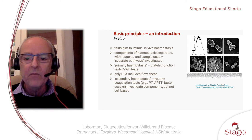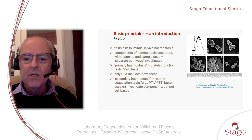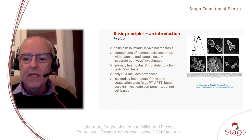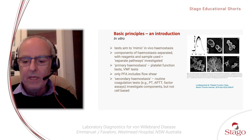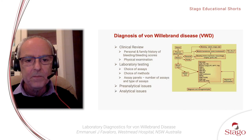A is where we have resting platelets, B where we have activated platelets, C where we have activated platelets starting to stick together, D where we form a platelet aggregate, and E — because this is only a primary wave — where we get disaggregation of the platelets.